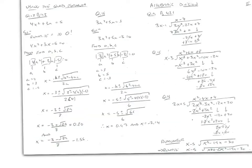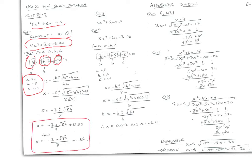Now look at this one: 4x²+3x = 5. We can't attempt to solve this until we set everything equal to 0. So we rewrite the equation as 4x²+3x-5 = 0. Now we can find a=4 to the left of x², b=3 between x² and x, and c=-5 between x and the equal sign. Plug it into your calculator and you get two solutions for x.